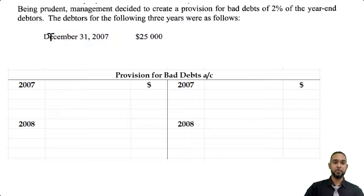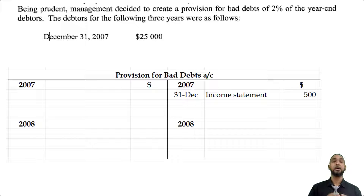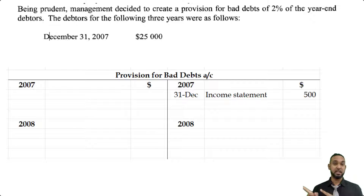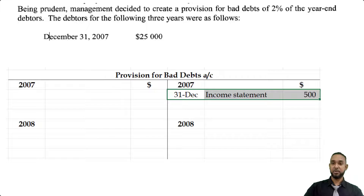So 2% of $25,000 is $500. The provision for bad debts will be credited for that entire $500 figure. Now why are we crediting? Because the function of the provision for bad debts account is to decrease the debtors balance. Debtors is an asset. To decrease an asset, you have to credit the asset account, or have a credit balance item — a contra asset — to act as a decrease in the balance sheet. So if the provision is going up, you have to credit.